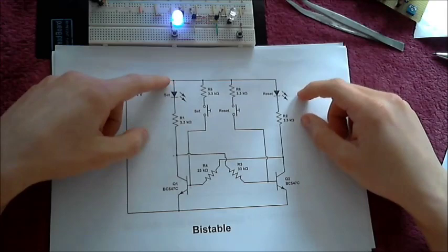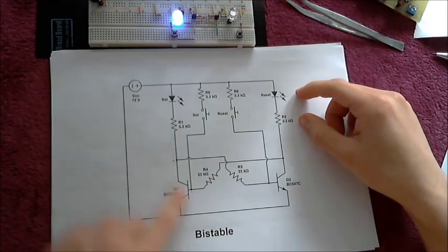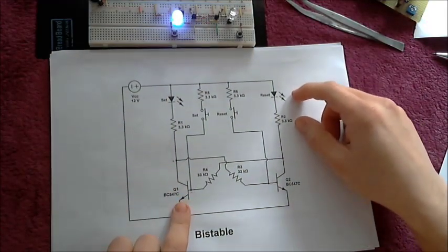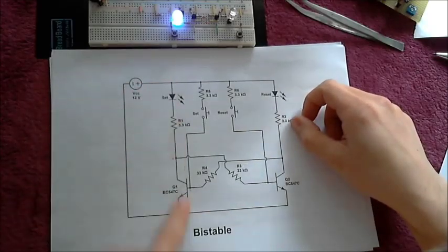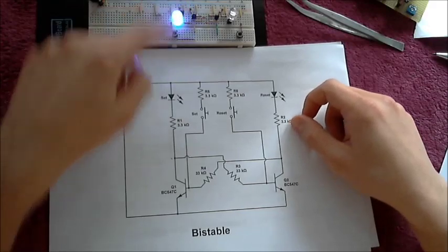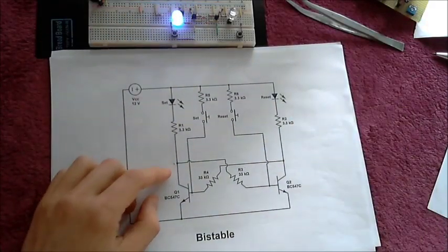A practical approach to how this works: when we power this up, it's going to start in one of these two states. Let's say it starts in the set state. This means that transistor Q1 is fully on and current flows through from here to here, powering up the LED.